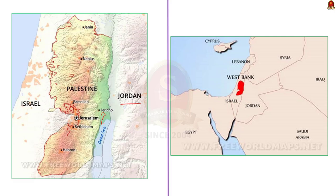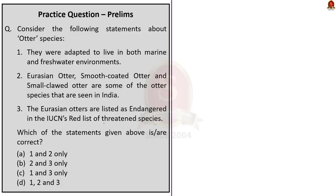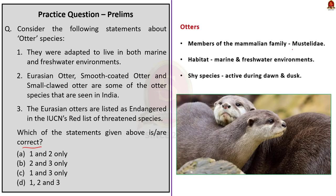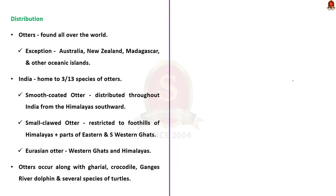Our next question is about otter species. Otters are members of the mammalian family Mustelidae, adapted to live in both marine and freshwater environments. They are shy species, difficult to find, and mainly active around dawn and dusk. Otters are found all over the world except in Australia, New Zealand, Madagascar, and other oceanic islands. India is home to three of the 13 species found worldwide: the Eurasian otter, smooth-coated otter, and small-clawed otter. The smooth-coated otter is distributed throughout the country. The small-clawed otter is restricted to the foothills of the Himalayas and parts of eastern and southern Western Ghats. Eurasian otters are found in the Western Ghats and Himalayas.